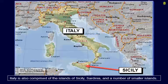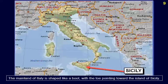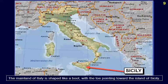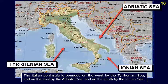Italy is also comprised of the islands of Sicily, Sardinia, and a number of smaller islands. The mainland of Italy is shaped like a boot with the toe pointing toward the island of Sicily. The Italian peninsula is bounded on the west by the Tyrrhenian Sea, on the east by the Adriatic Sea, and on the south by the Ionian Sea.